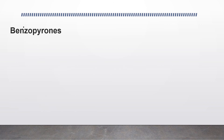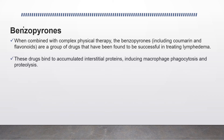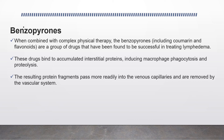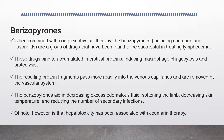Benzopyrones — including coumarin and flavonoids — when combined with complex physical therapy, are a group of drugs found to be successful in treating lymphedema. These drugs bind to accumulated interstitial proteins, stimulating macrophage phagocytosis and proteolysis. The resulting protein fragments pass more readily into the venous capillaries and are removed by the vascular system. Benzopyrones aid in decreasing excess edematous fluid, softening the tissue, decreasing skin temperature, and reducing the number of secondary infections. Of note, however, these drugs are hepatotoxic and patients should be followed appropriately.